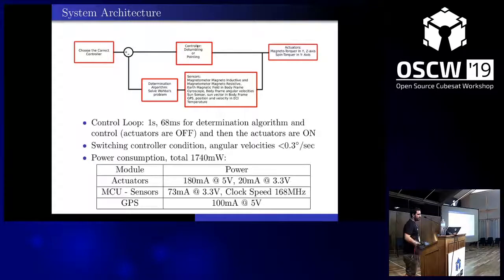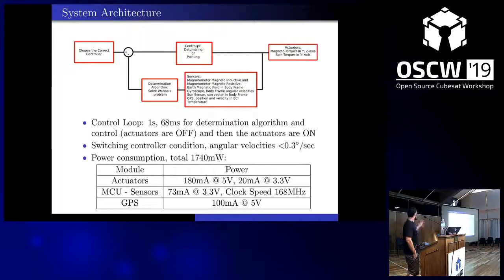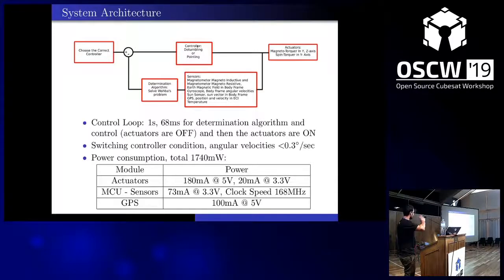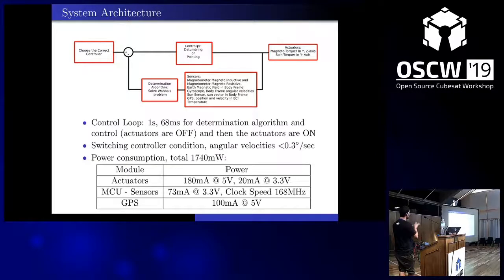A temperature sensor to compensate the offsets of the gyroscope. Other specifications of ADCS include the control loop time, the switching condition — how the controllers switch — and the power consumption.